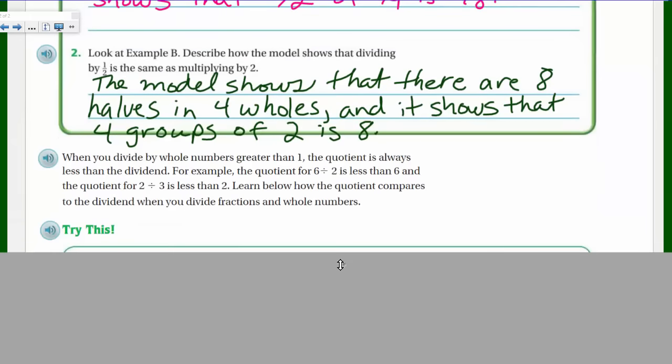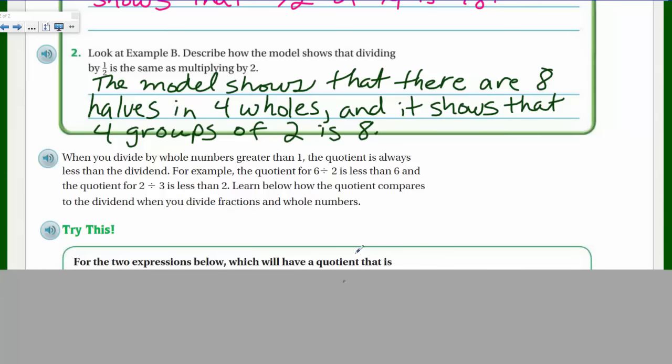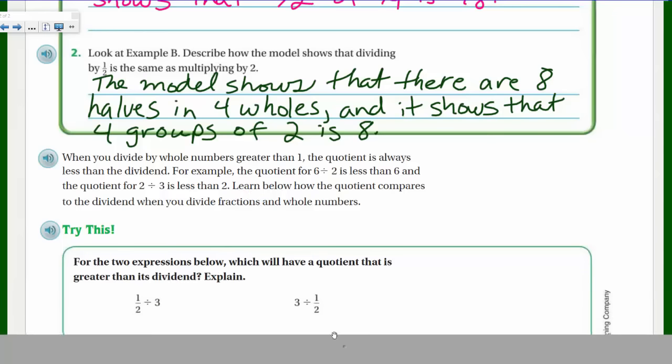When you divide by whole numbers greater than one, the quotient is always less than the dividend. Think about, for example, the quotient for six divided by two is less than six. And the quotient for two divided by three is less than two. So it's saying if you divide by whole numbers greater than one, we were dividing by whole numbers that were greater than one, then the quotient is always less than the dividend. Learn below how the quotient compares to the dividend when you divide fractions and whole numbers.